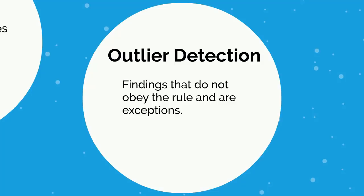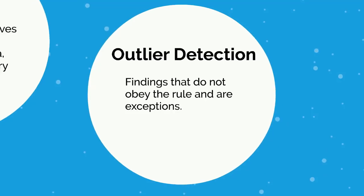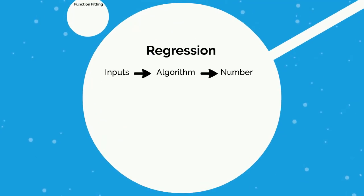Now let's switch over to regression algorithms. Whereas classification algorithms are designated by their qualitative output, regression algorithms are going to have a quantitative output. You have your inputs, your algorithm, and what you're producing is going to be a number. That is the defining feature of a regression algorithm — quantitative output.